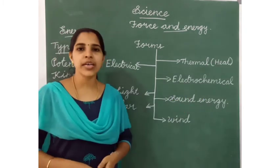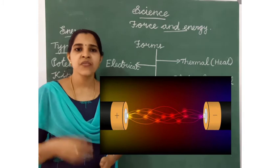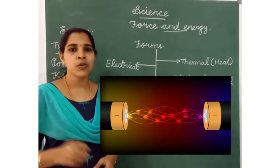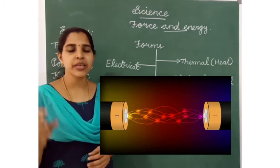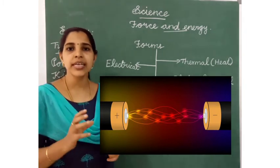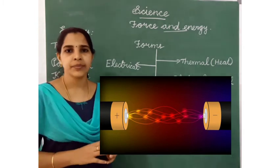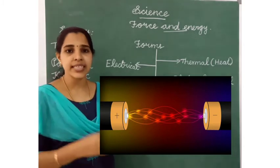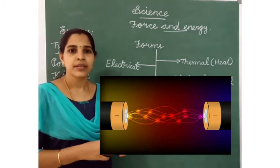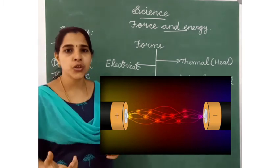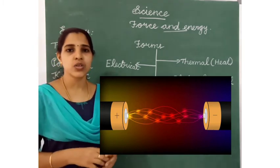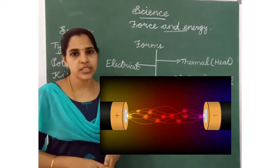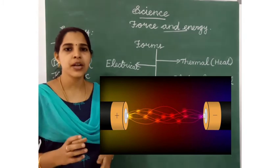Next is electrochemical energy. Electrochemical means we use a battery. We give charge to a mobile phone using a battery. Chemical energy is stored in the battery, and the battery gets its charge from electrical energy. So the energy stored in a battery is called electrochemical energy. A battery is an example of this.